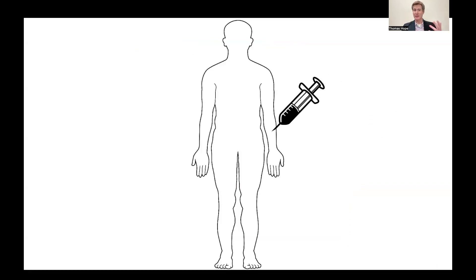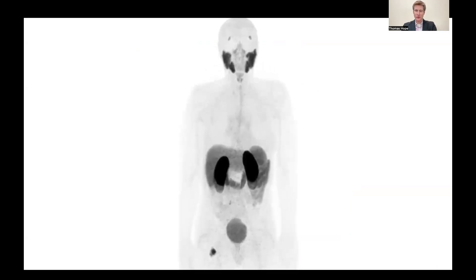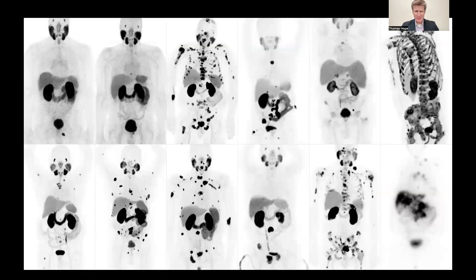We create images that show us where metastatic disease is — in this case, prostate cancer in the right femur. Keep in mind that prostate cancer is very different across patients. Some have no evidence of disease, and then some have low volume, focal, or diffuse disease with different levels of uptake. It's very heterogeneous across patients.